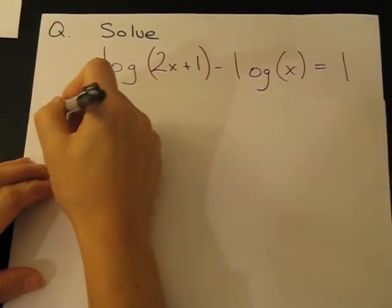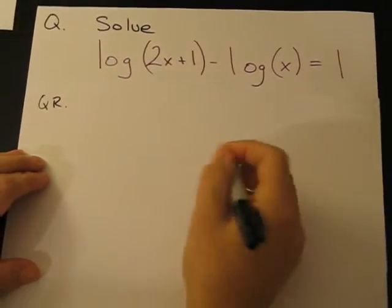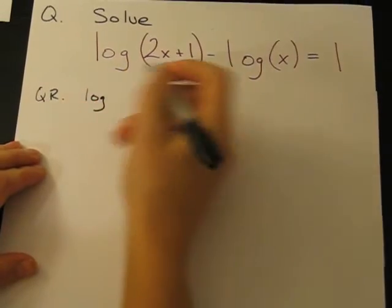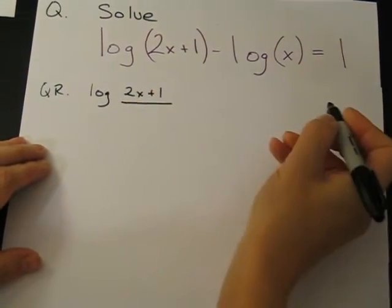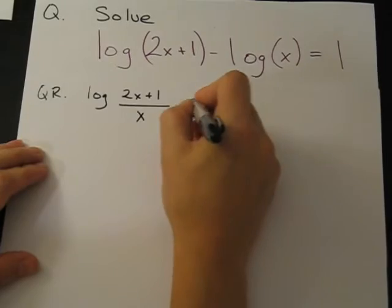So using the quotient rule, we have log[(2x + 1)/x] = 1.